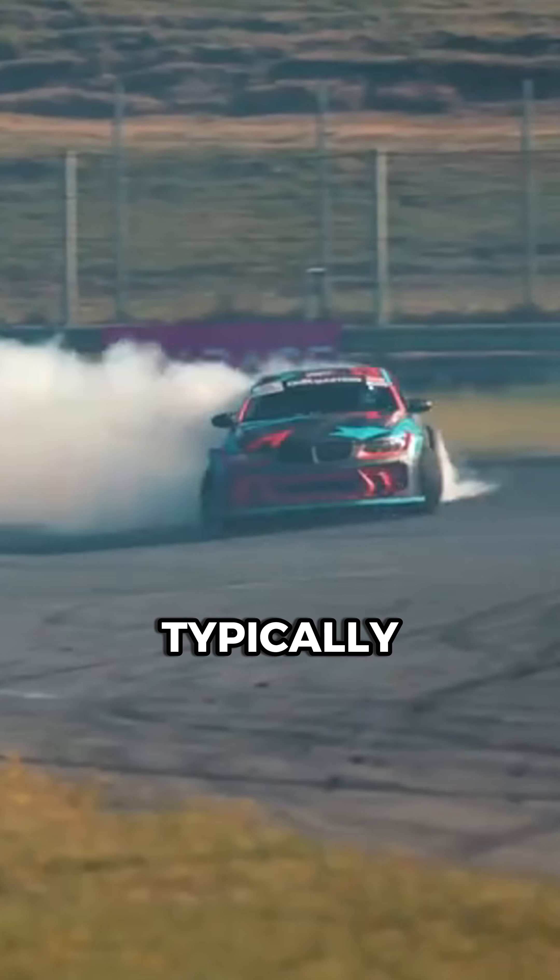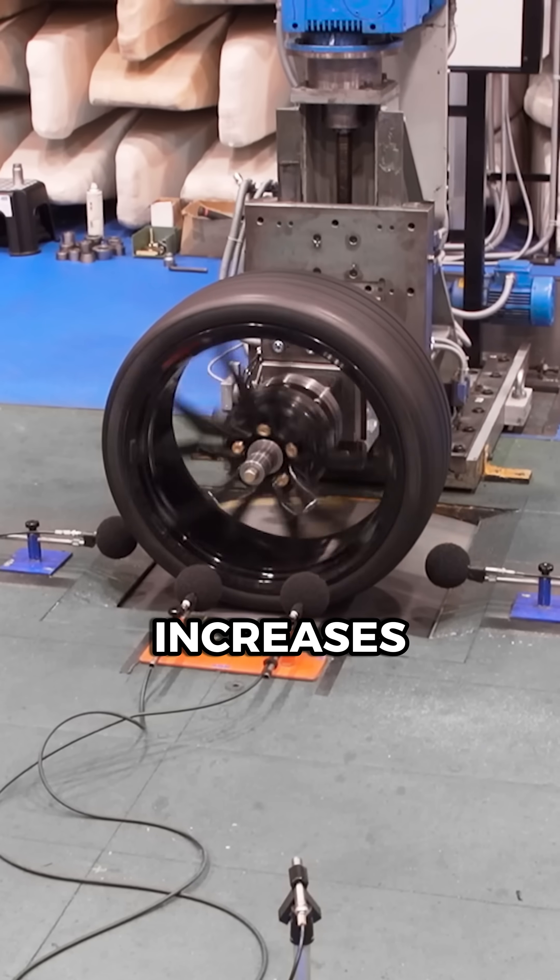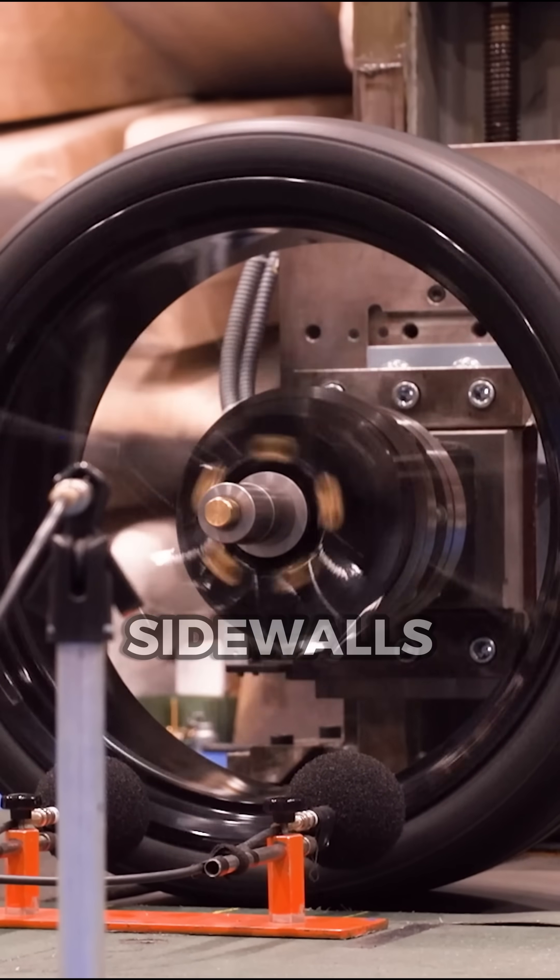Air pressure is critical, typically set between 13 and 17 PSI to maximize the contact patch. This increases grip, but also puts more stress on the sidewalls.